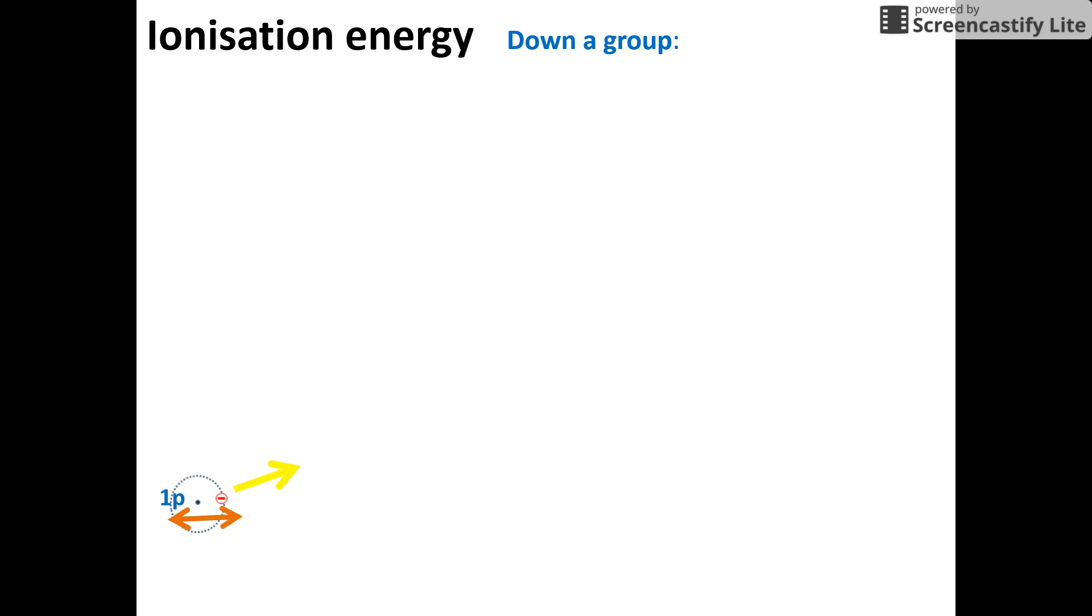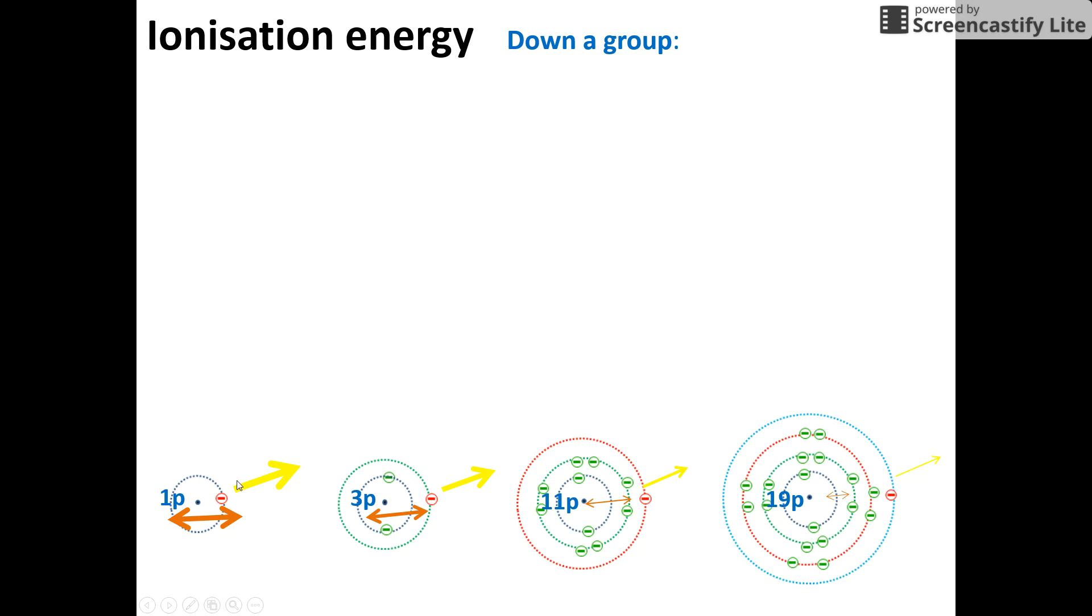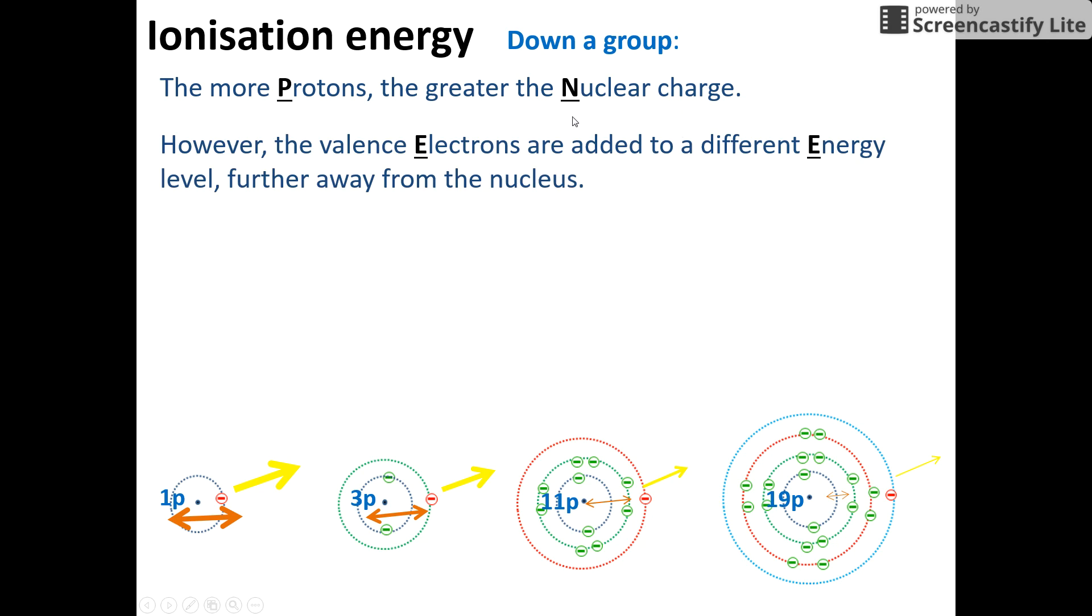How about down a group? The same thing. I've got your hydrogen, lithium, sodium, potassium. You can see it's much harder to remove an electron from hydrogen than it is to remove from potassium. And it's the same thing. I've got more protons here, so that is as though it should increase the attraction.